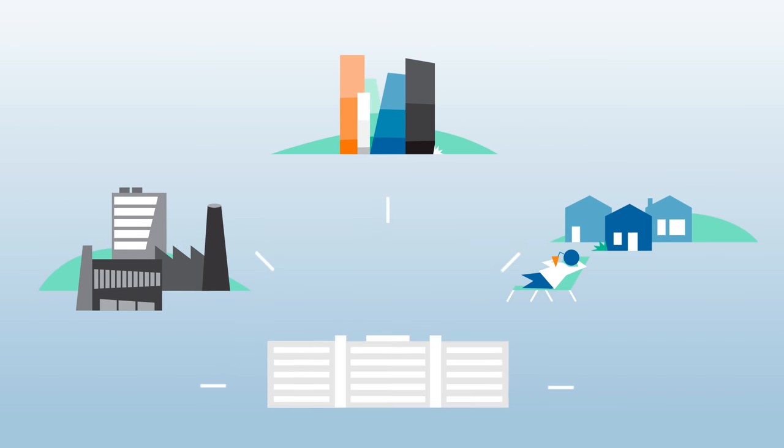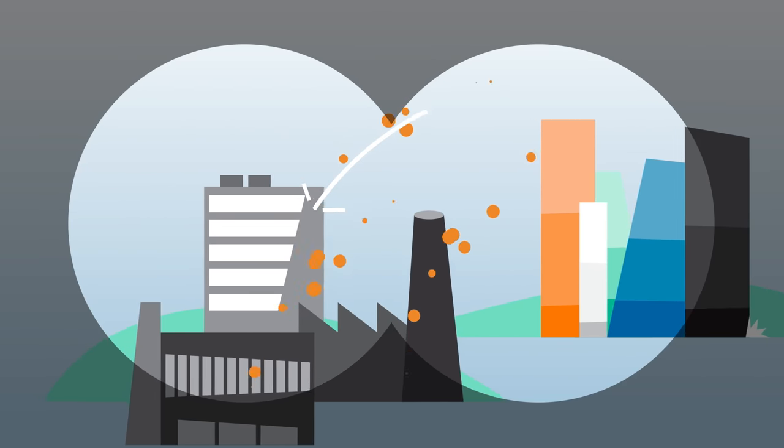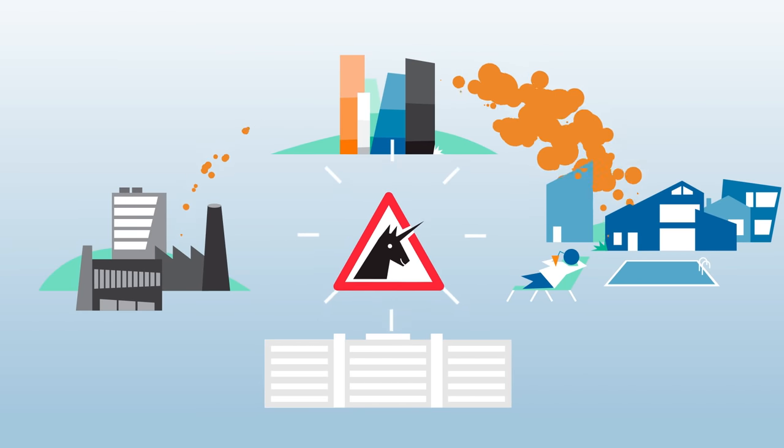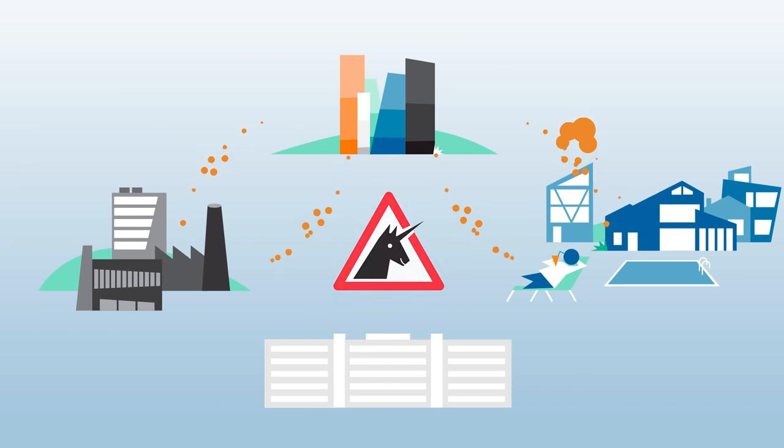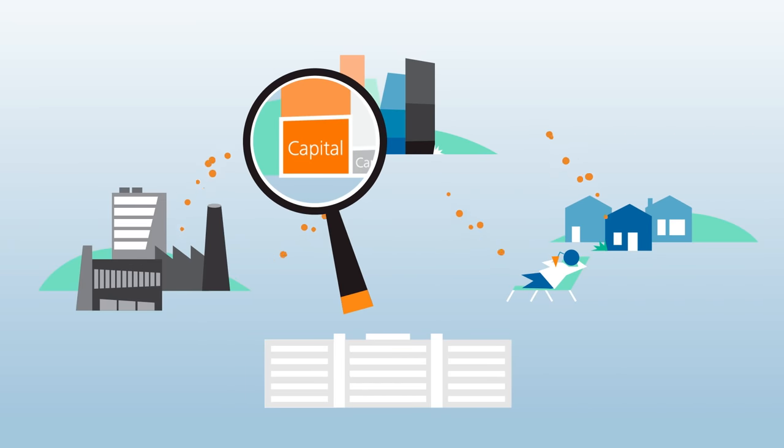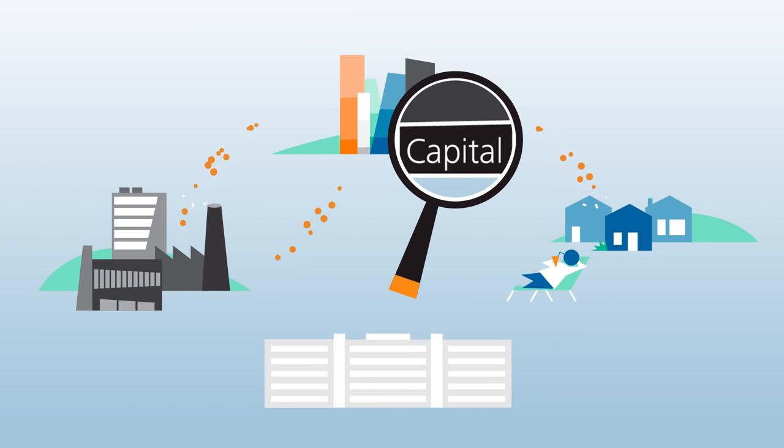However, because we know all this, the Bundesbank proactively monitors and assesses potential threats to financial stability. It looks at whether loans are granted too easily, whether too much optimism is leading to risks being underestimated, whether individual banks are endangering the system, and assesses the general resilience of the financial system.